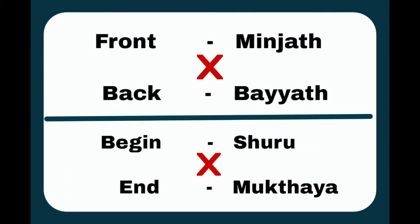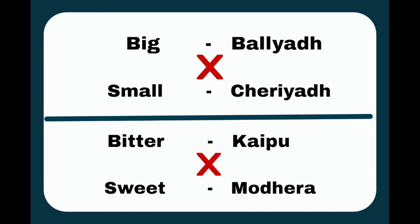Front — Minyat. Back — Bayat. Begin — Shuru. End — Muktaya. Big — Baljadu. Small — Chariadu.